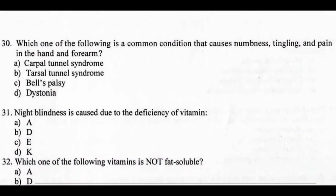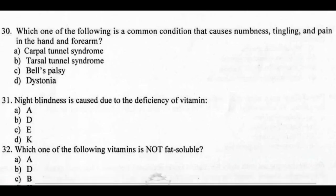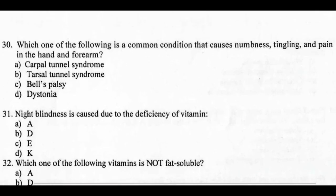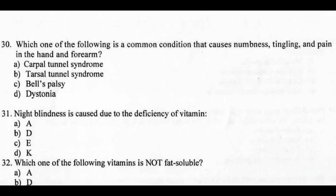Question 30: Which of the following is a common condition that causes numbness, tingling, and pain in the hand and forearm? Right answer: carpal tunnel syndrome (CTS). Carpal tunnel syndrome is caused by nerve compression.